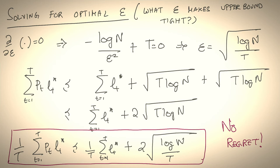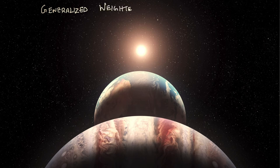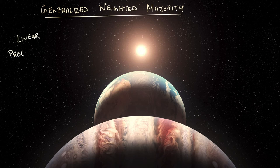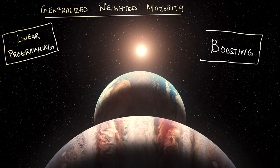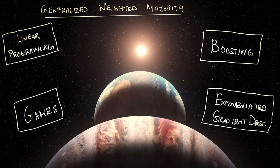We now need to answer one last question: what is the optimal value of epsilon? Take the gradient and set it to zero — epsilon is then the square root of log n over T. Plugging this into the original upper bound gives the expected loss of the learner. Dividing both sides by T gives average regret equal to square root of log n over T, which goes to zero as T goes to infinity. So we have a no-regret algorithm.